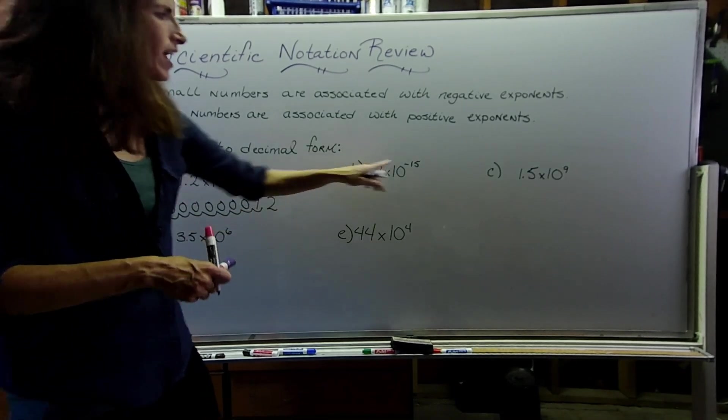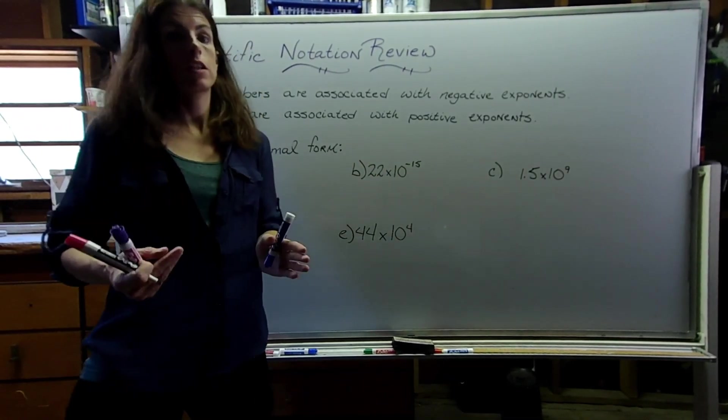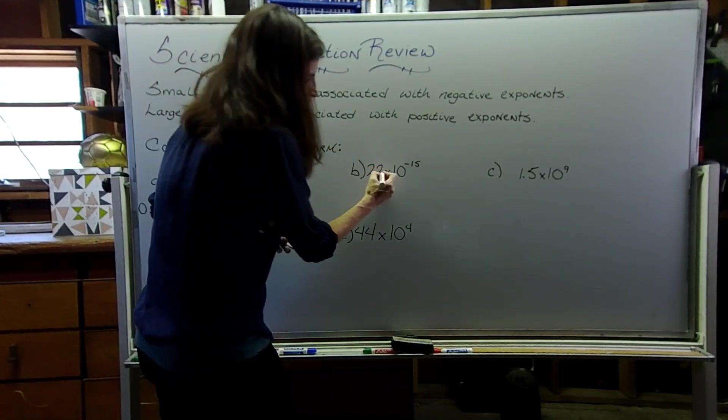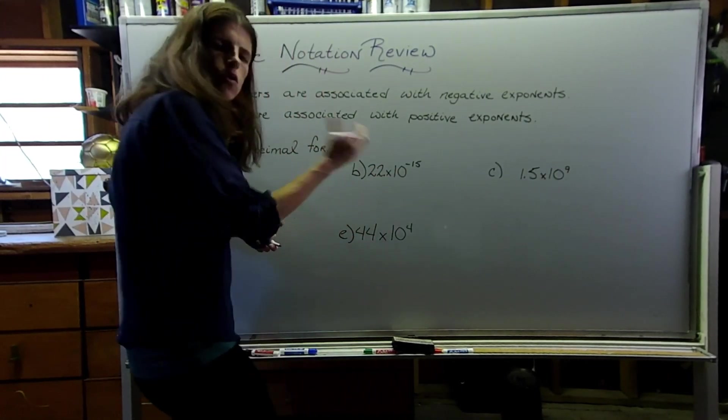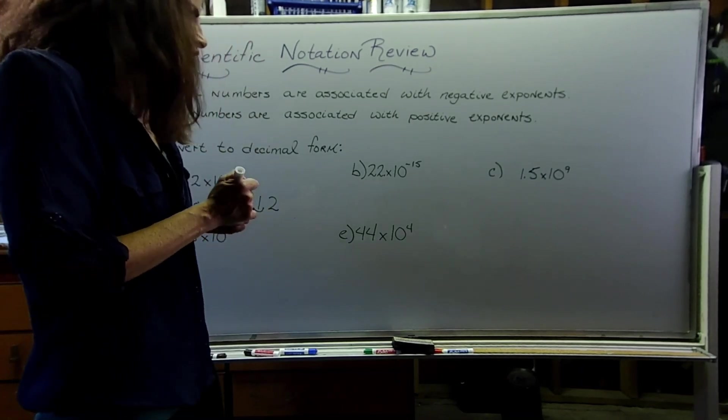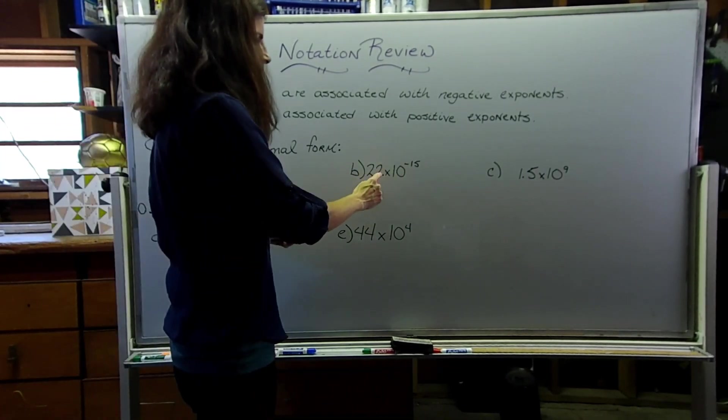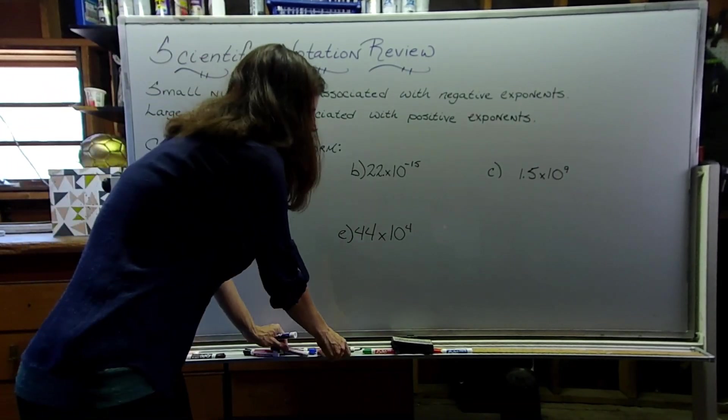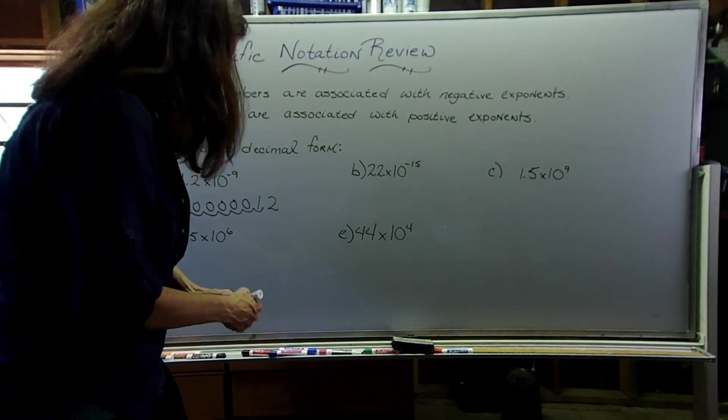Letter B, we have a negative 15, so we know that's going to be a super small number. Where's our decimal point here? Our decimal point is going to be all the way to the right of the 22. Now I'm going to move my decimal point 15 spaces to the left, and put zeros in all of those spaces.